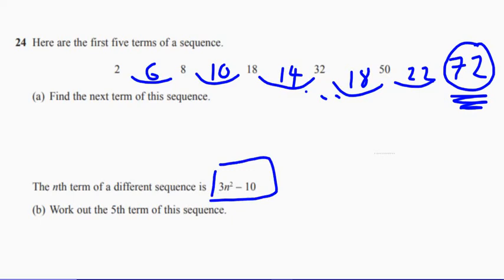So all that wants us to do is to put a 5 in there. So it just wants us to do this: 3 times 5 squared minus 10.